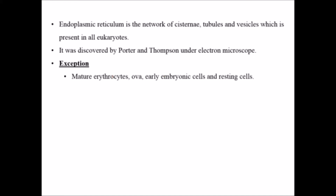For example, RBCs are basically employed for oxygen transportation, and endoplasmic reticulum is a very large organelle that would occupy most of the space of the cell. So it is present during the immature stage of RBCs, but on maturation it generally does not have endoplasmic reticulum, so it has more space for the transportation of oxygen, which is its basic function.